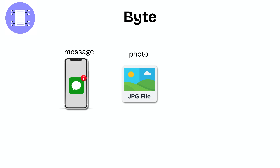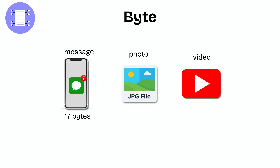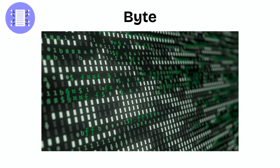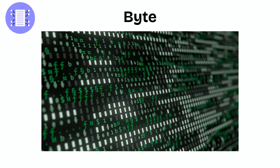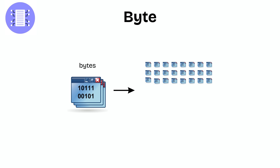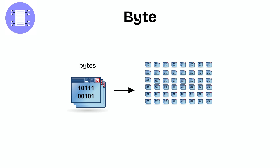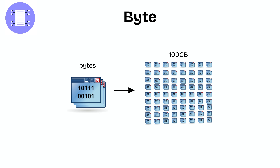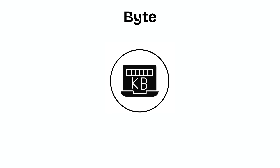Every text message, photo, or video begins with bytes stacked together. Even though it feels tiny, bytes are like digital atoms — small on their own but powerful when billions are combined.